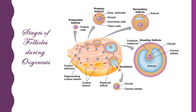The follicular cells surround the oocyte from all sides to nourish it. An oocyte surrounded by numerous follicular cells together is called a follicle. As an oocyte undergoes various stages of development, so does the follicle. We name these stages as primary follicle, secondary follicle, and finally the Graafian follicle. A small cavity called the antrum appears in the secondary follicle.